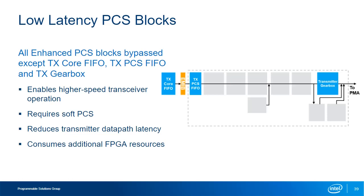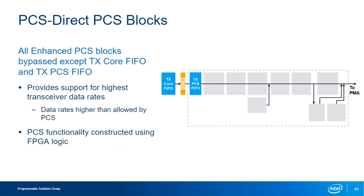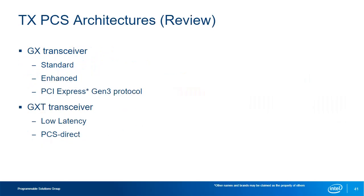Since almost all of the PCS is disabled in the Low Latency PCS, required PCS functionality must be performed by logic in the FPGA fabric. The PCS Direct PCS configuration is another PCS architecture for higher-speed GXT transceivers and is also a special implementation of the Enhanced PCS. In this case, all blocks in the PCS path are disabled except for the PCS core interface. Thus you can achieve the highest transceiver speeds but are limited to the data width of the PMA, and all PCS functionality must be built in the FPGA fabric. This concludes the look at the transmit PCS architectures.